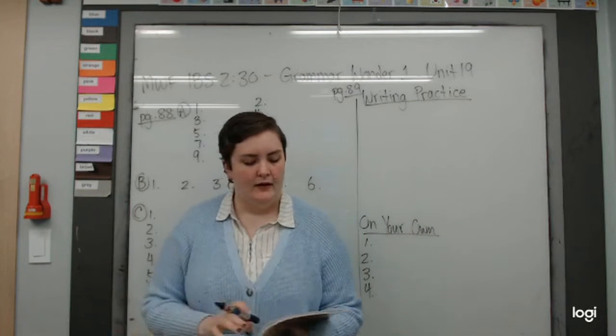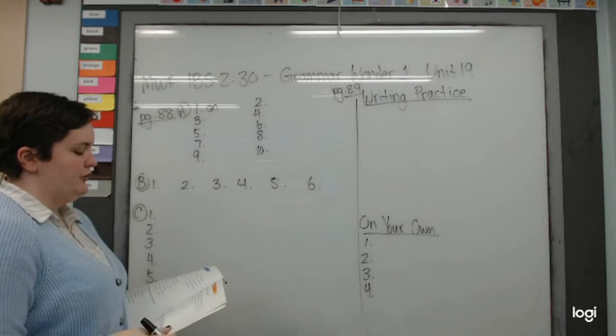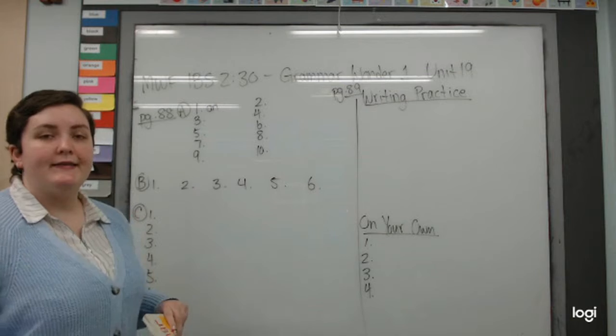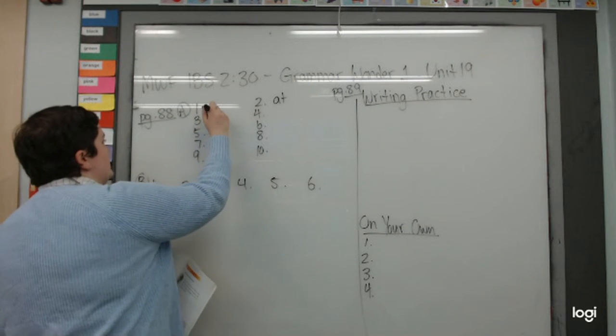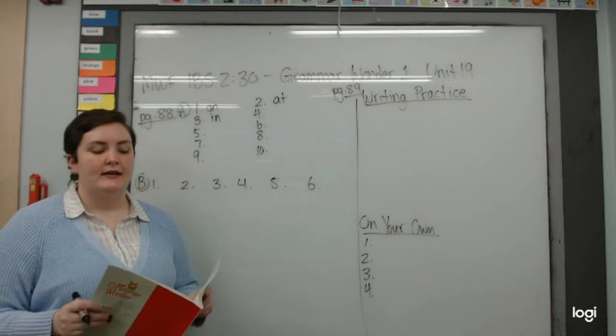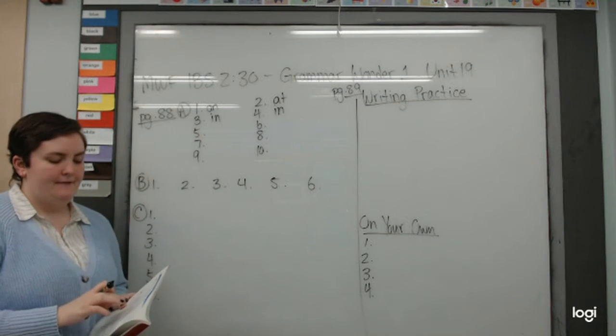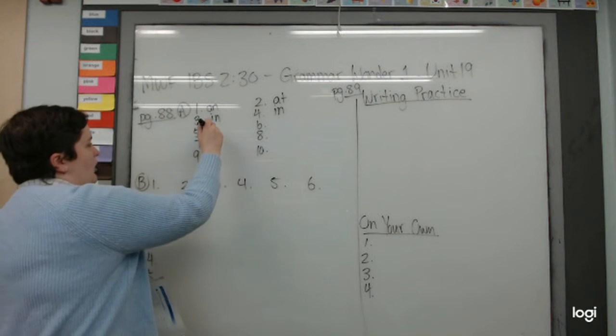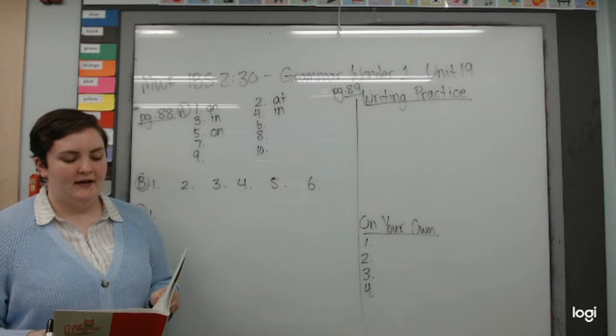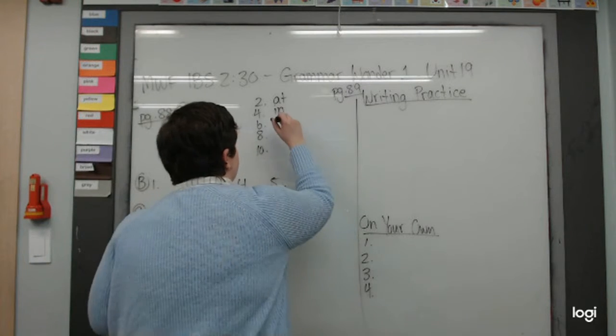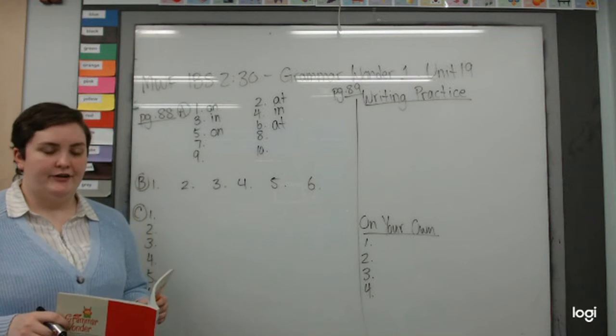Let's do part A. Number one, Sunday. Sunday is day of the week, we say on. Number two, nine o'clock. Nine o'clock is time, we say at. Number three, winter. Season, in. In winter. Number four, afternoon. Time of the day, we say in, in the afternoon. Number five, May 5th is date, we say on. Number six, dinner time. Dinner time is time of day, at dinner time.